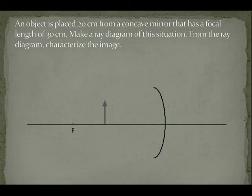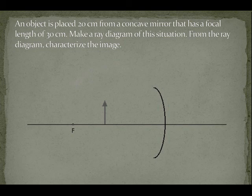But wait, I can make your fingers shoot lasers if you answer me another riddle. An object is placed 20 centimeters from a concave mirror that has a focal length of 30 centimeters. Make a ray diagram of this situation. From the ray diagram, characterize the image.